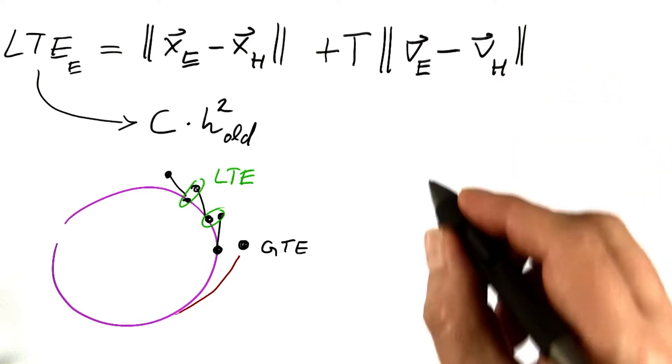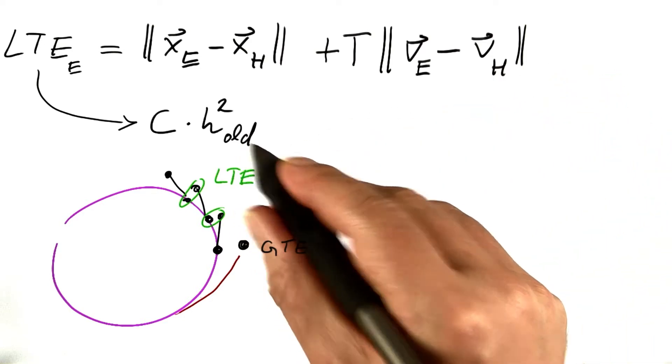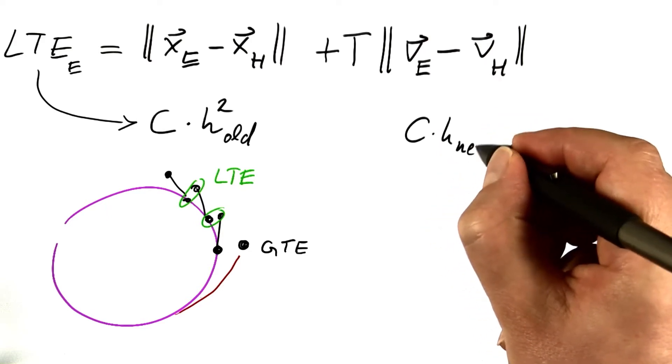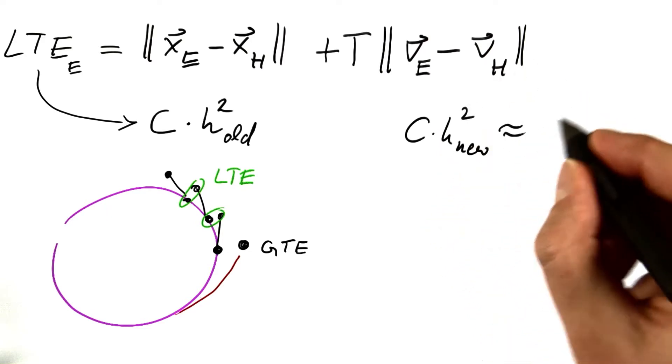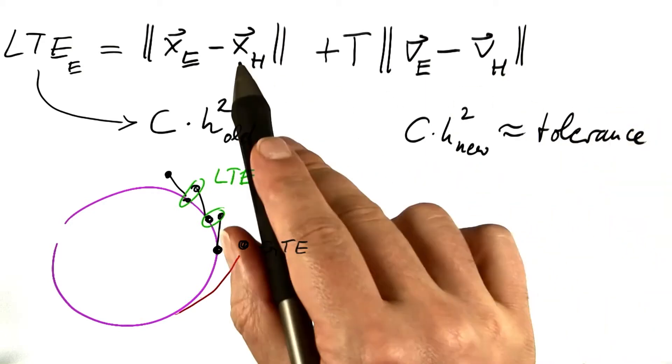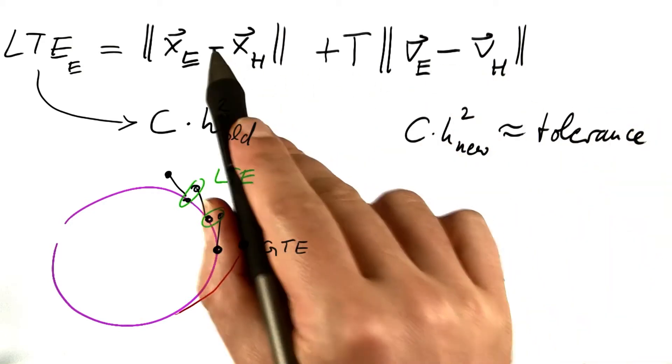Let's call that tolerance. What I want is to find a step size, let's call it h nu, so that this error is of the fixed size called tolerance, which would be measured in meters, by the way, with this type of error.